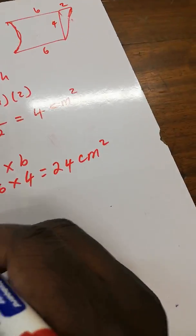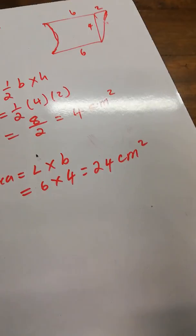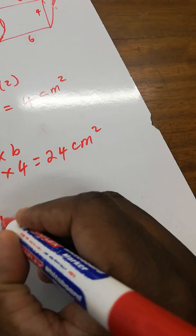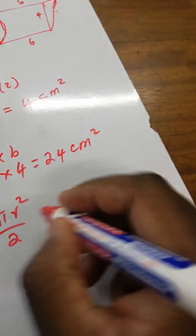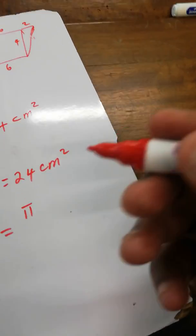Area of a circle equals pi r squared. We divide this by two for the semicircle. Pi equals 3.14.